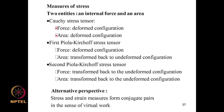In the first Piola-Kirchhoff stress tensor, the force is measured with respect to the deformed configuration but the area is transformed back to the undeformed configuration — it is current force per unit undeformed area. In the second Piola-Kirchhoff stress tensor, both the force and area are transformed back to the undeformed configuration. Alternatively, stress and strain measures can be viewed as conjugate pairs which together produce an expression for internal work.